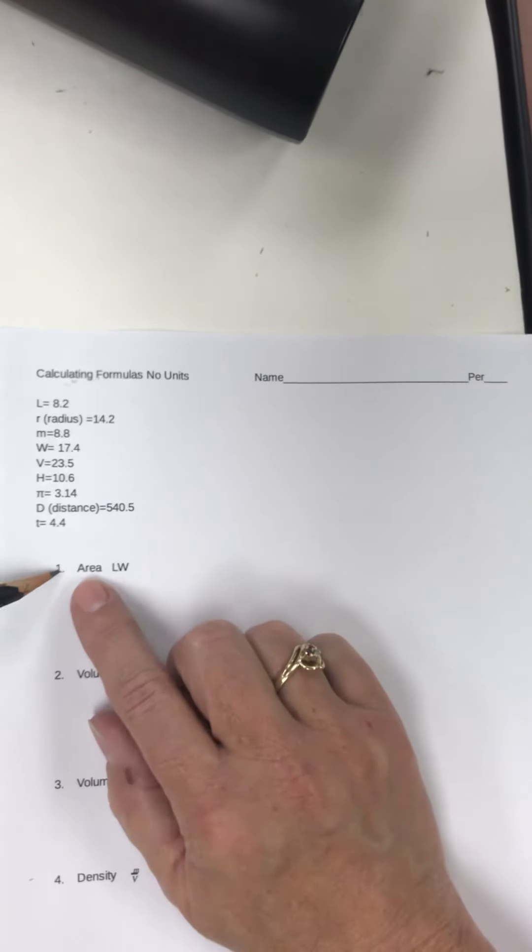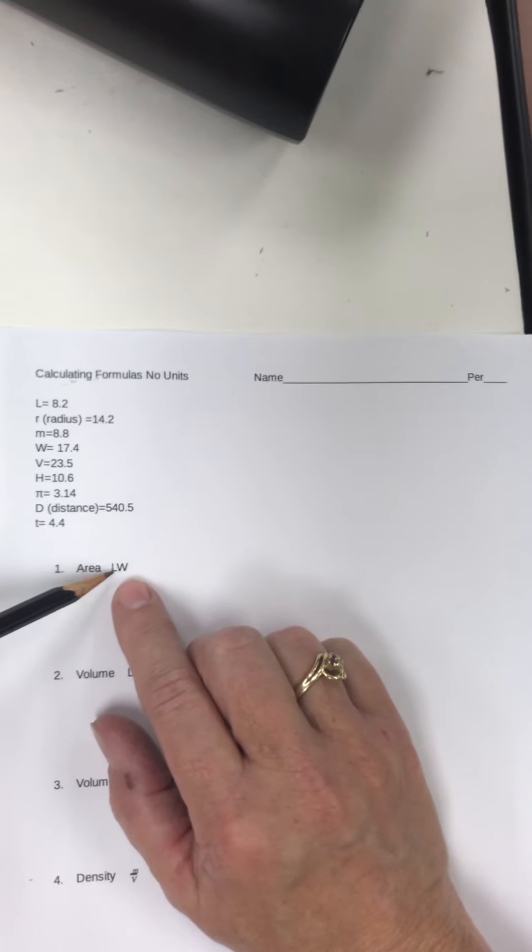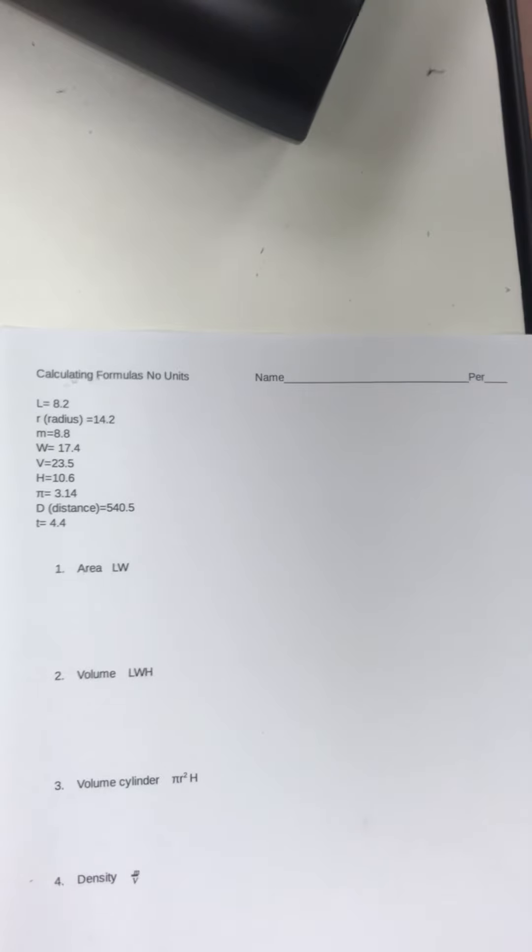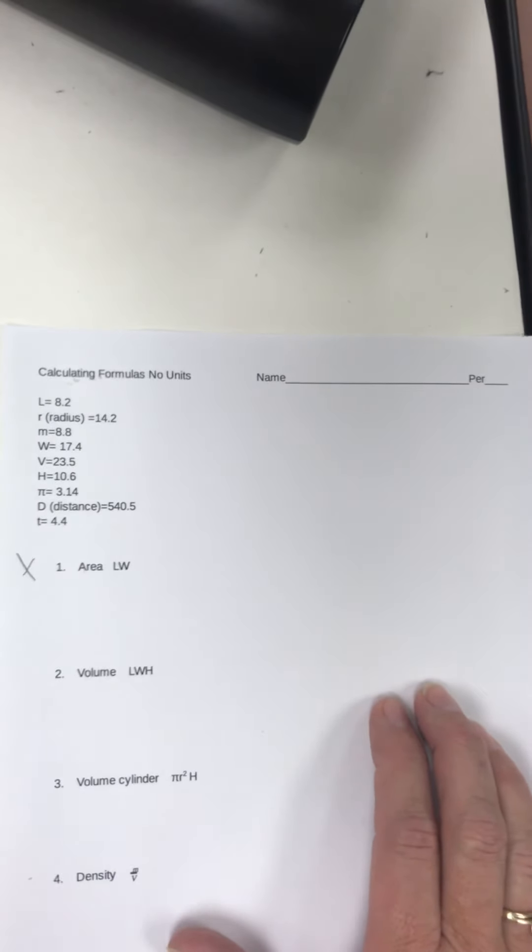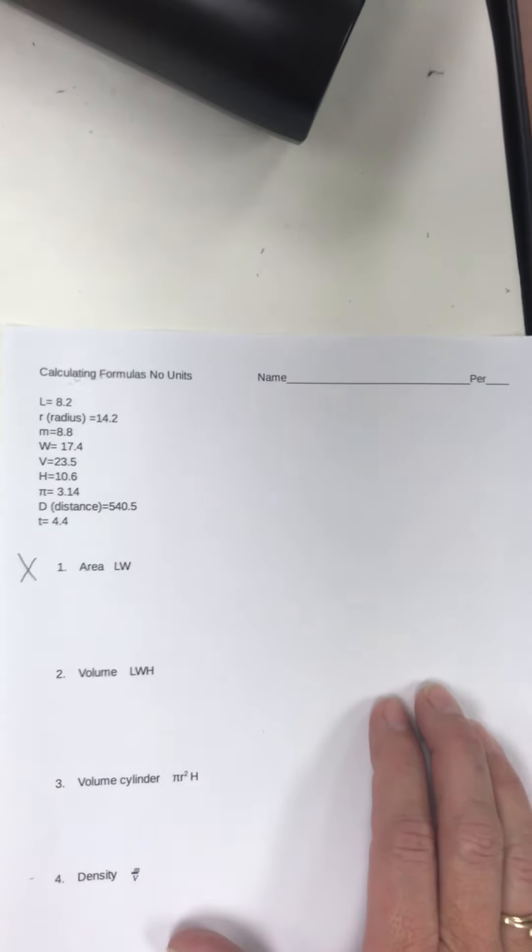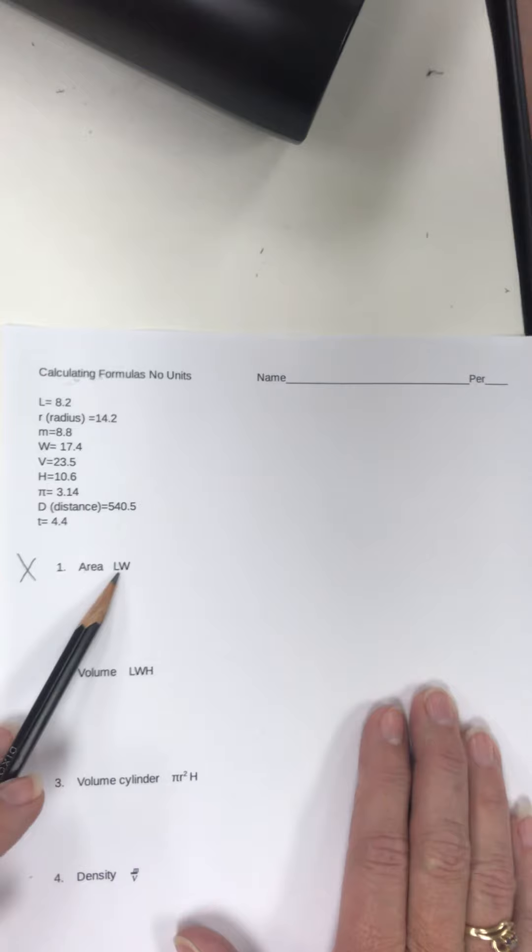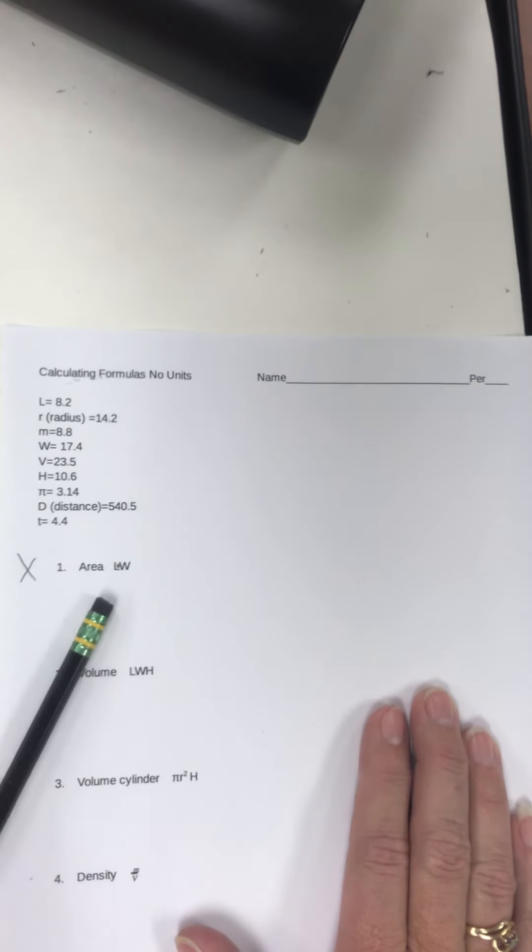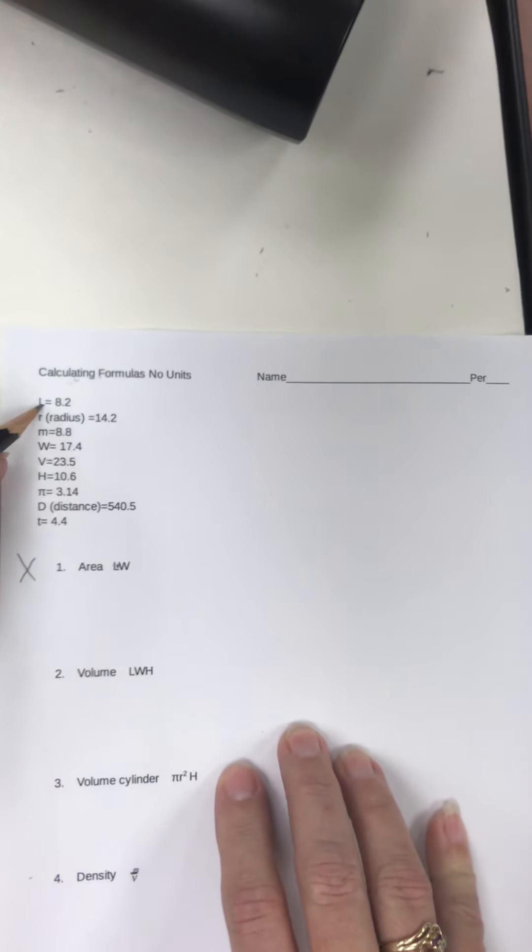So this one, number one is area. The formula for area is LW. Notice it doesn't say add, subtract, multiply, or divide. The reason it doesn't is because the X that means multiply is also used as a variable or an unknown number. So it gets very confusing. So what mathematicians do, if it's a times problem, they leave it blank or they'll put a dot in there, but no X. The problem with the dot is you've got to make sure it doesn't look like a decimal point.